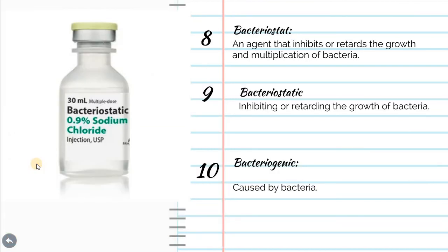Bacteriostat is the agent that inhibits or retards the growth of bacteria. It is not bactericidal — bactericidal kills — but bacteriostat retards the growth and multiplication of bacteria. Bacteriostatic is the process of inhibiting and retarding the growth of bacteria. Bacteriogenic means anything that is caused by bacteria; for example, gingivitis is bacteriogenic.